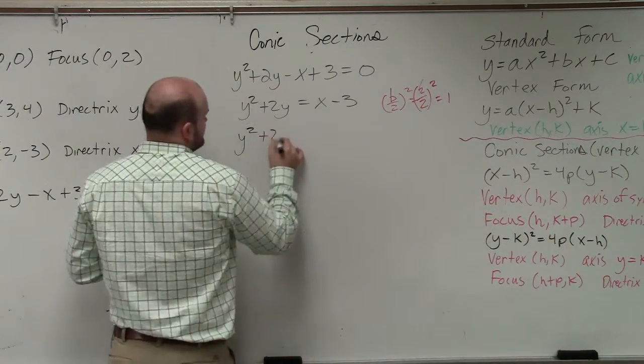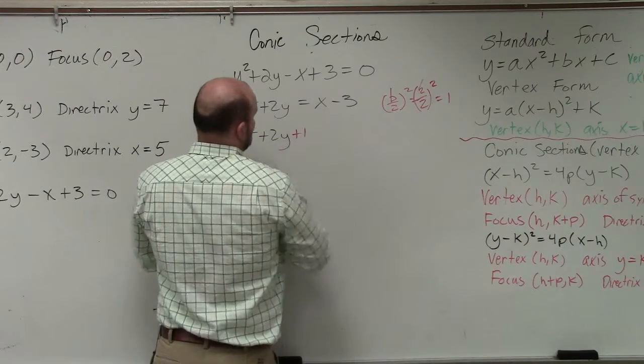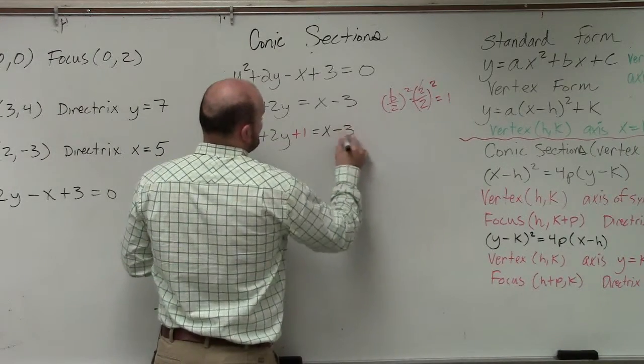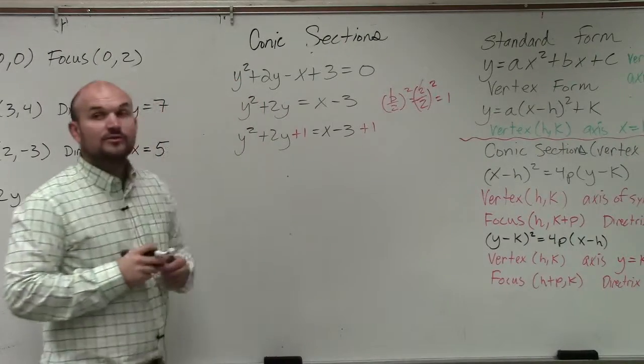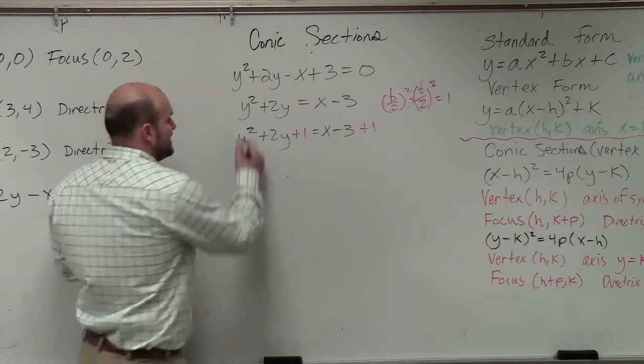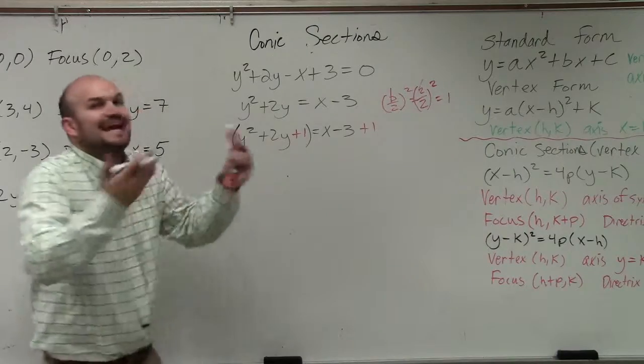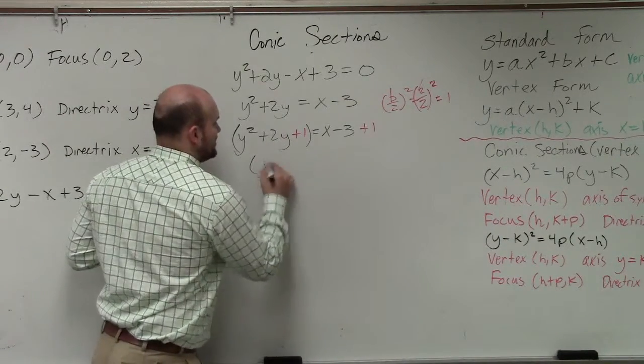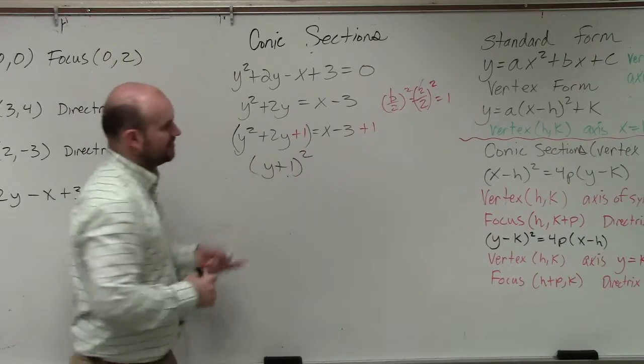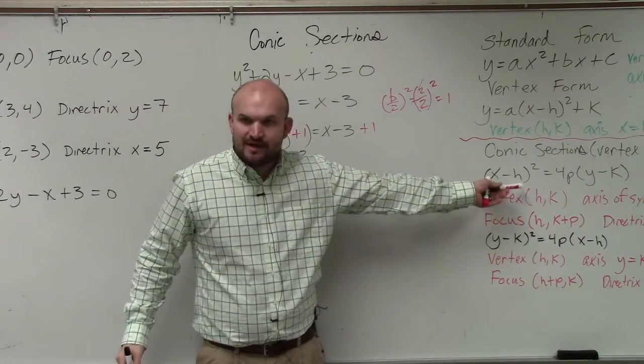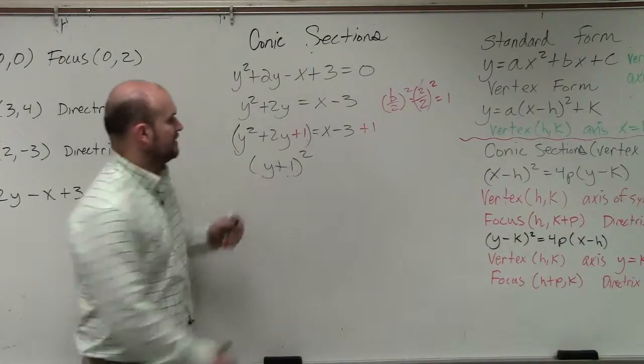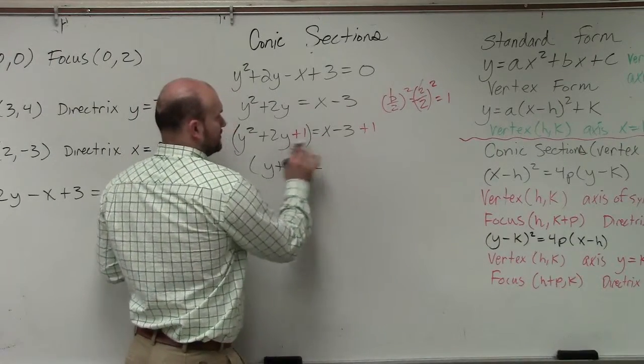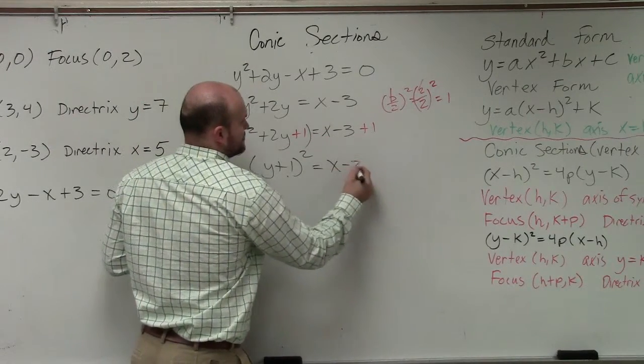So I have y squared plus 2y plus 1 equals x minus 3 plus 1. The reason why I do that is now I have created a perfect square trinomial, which can be factored into a binomial squared. Now I have satisfied that requirement. Then here, I get plus 1, so that's going to be x minus 2.